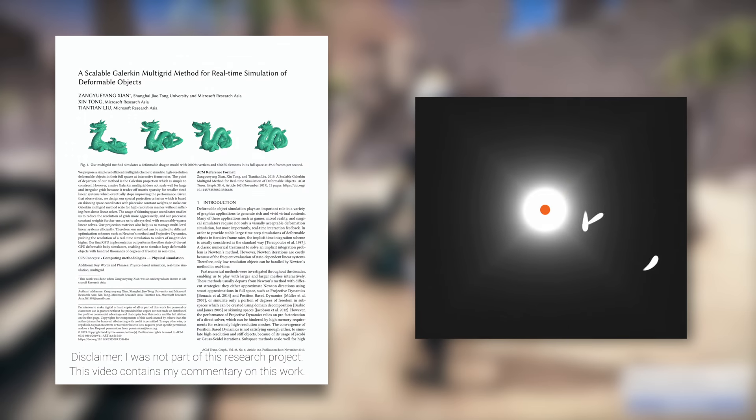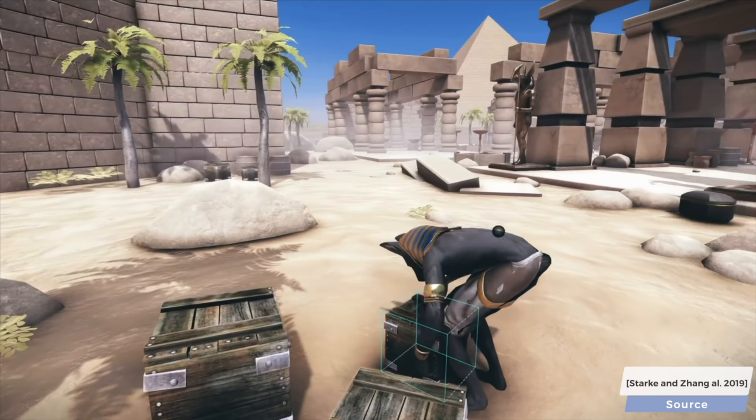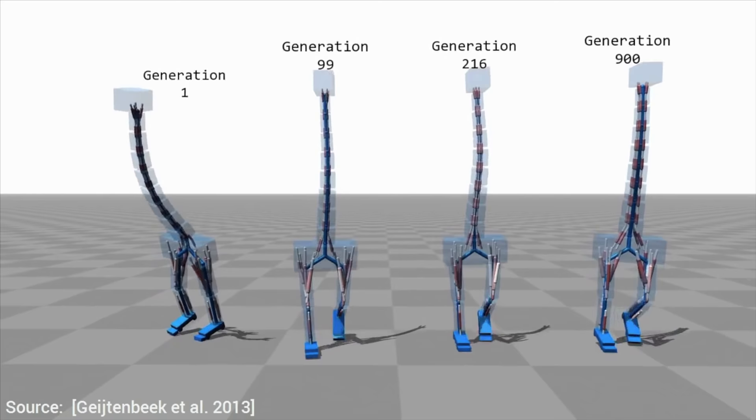Dear Fellow Scholars, this is Two Minute Papers with Dr. Károly Zsolnai-Fehér. With the power of modern computer graphics and machine learning techniques, we are now able to teach virtual humanoids to walk, sit, manipulate objects, and we can even make up new creature types and teach them new tricks, if we are patient enough.